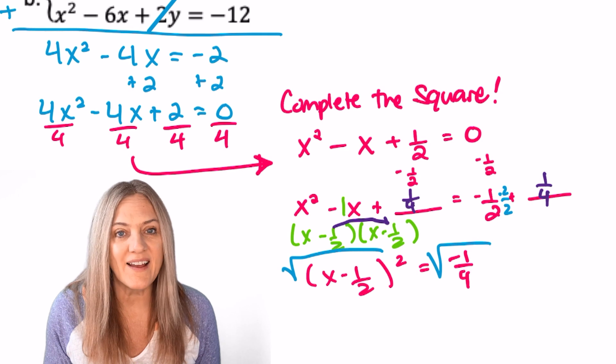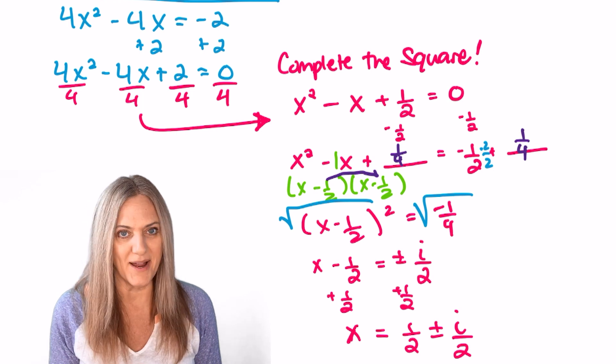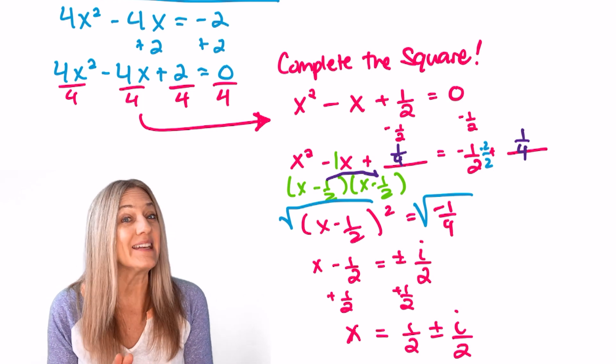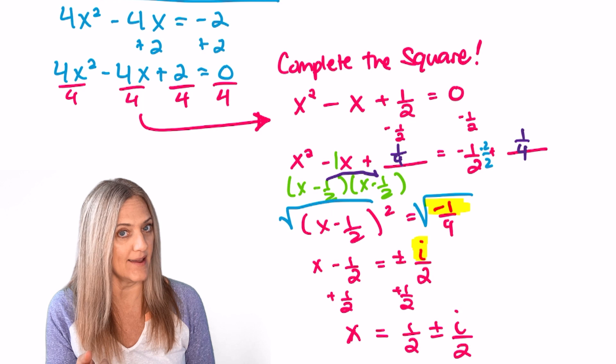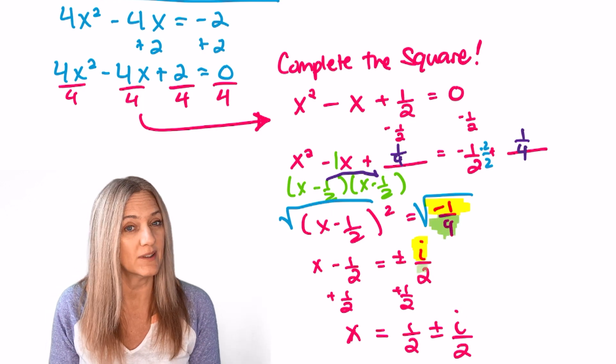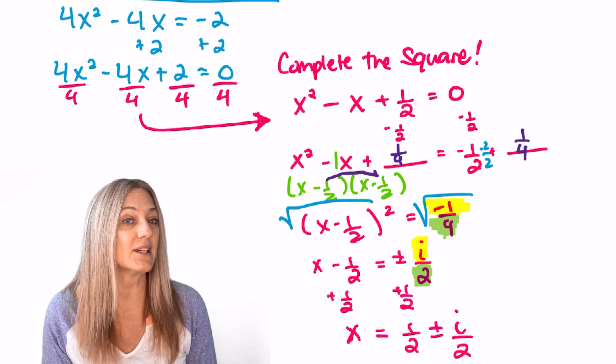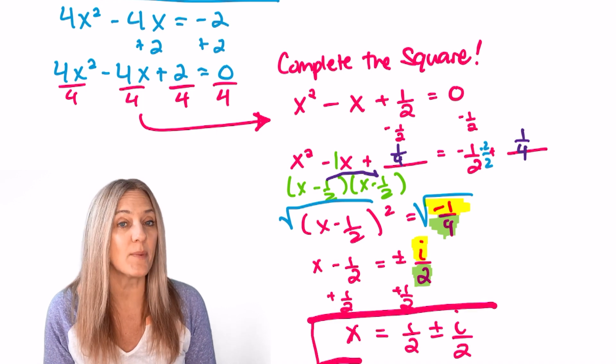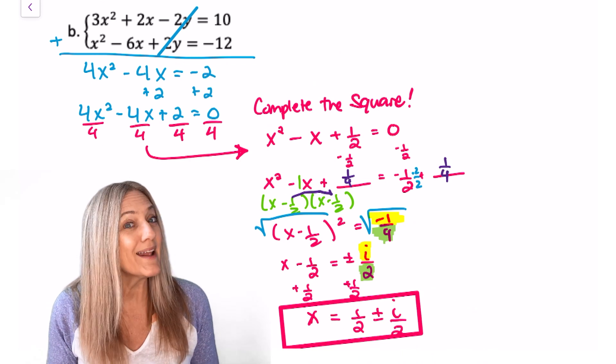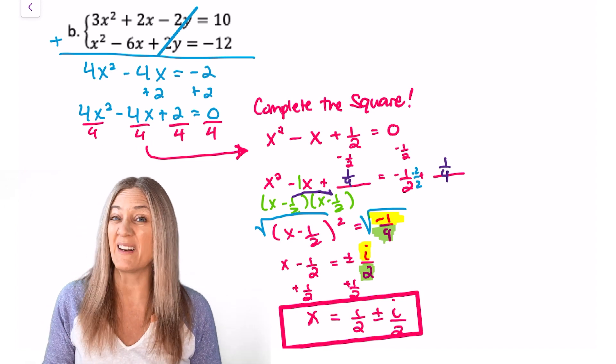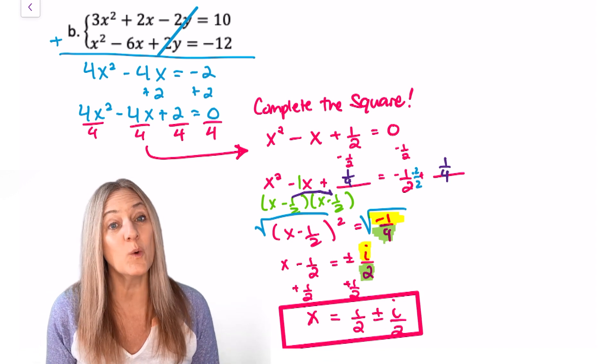Now all we need to do is square root both sides and finish solving for x. Once we square root both sides, remember that we have plus minus. But then that square root of negative 1 fourth, we just square root the numerator. Square root of negative 1 is i. Square root the denominator. Square root of 4 is 2. The last thing we need to do is add the 1 half, move it over. So our final answer is x equals 1 half plus or minus i divided by 2. This is a problem that worked out nicely using completing the square. We kind of had to make it work though. Quadratic formula would have been a lot more work. So just start paying attention. Are there times when completing the square would be a better option?